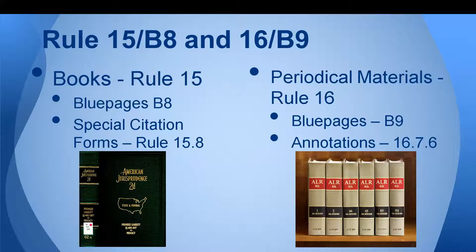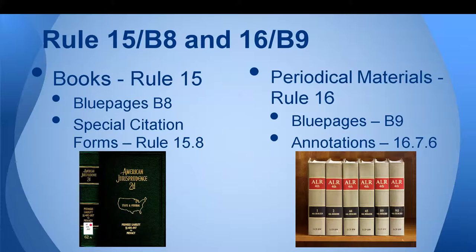Our focus today is on Rule 15, or Rule B8 in the blue pages, for books, and on Rule 16, or B9 in the blue pages, for periodicals. At first glance these two types of sources seem very different, but sometimes it's hard to tell what a source is when you look at it on the shelf. Compare American Jurisprudence, which is cited as a book under the special citation forms of Rule 15, and American Law Reports, which is cited under Rule 16 as a periodical. They are both bound print sources published by West that come in a series and sit on the shelves in our library.